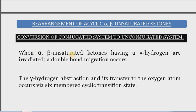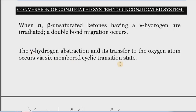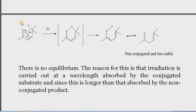When alpha-beta unsaturated ketones having a gamma hydrogen are irradiated, a double bond migration occurs. The gamma hydrogen is abstracted and transferred to the oxygen atom via a six-membered cyclic transition state. So the carbon near the carbonyl group is alpha, the next is beta, and this is the gamma hydrogen. This gamma hydrogen shifts from the gamma carbon to the oxygen when the six-membered cyclic transition state is formed.